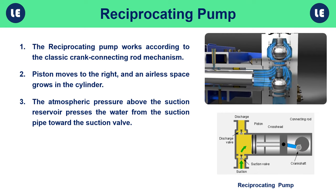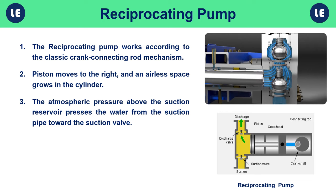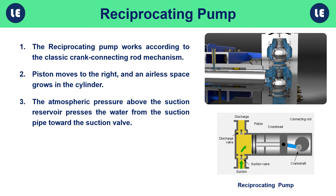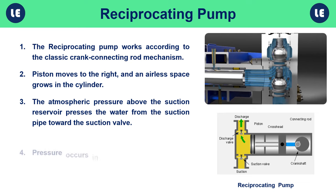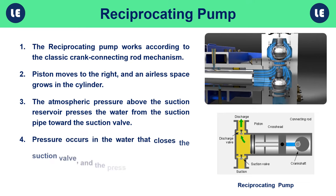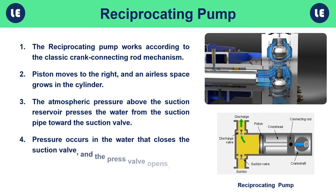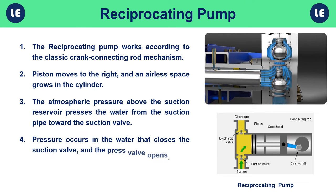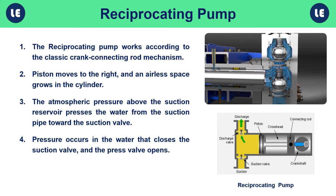When the pump cylinder is filled with water, the suction stroke ends. After that, the piston moves to the left, creating pressure in the water that closes the suction valve and the press valve opens. The water can now flow into the press pipe and fill the press reservoir.